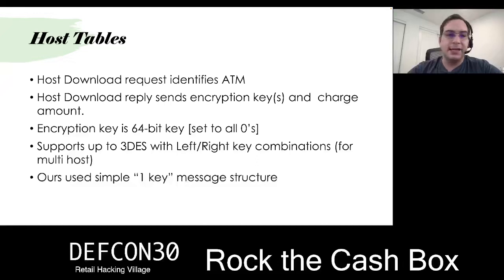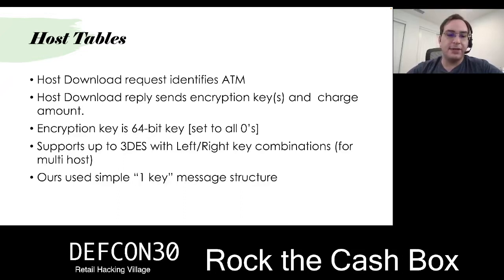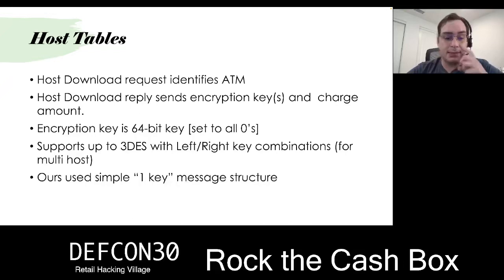Now we're actually talking to the ATM — that's really exciting. The ATM does a host download table request, which gives the ATM everything it needs including encryption keys, charge amount, and a few other values. It supports up to triple DES with left and right key combos so multiple hosts can be set up without anyone knowing the whole key. It's a 64-bit key. However, what we found is you can also just send it all zeros, which is great — when the ATM loads this up, everything is zeros and it's easy to decrypt.